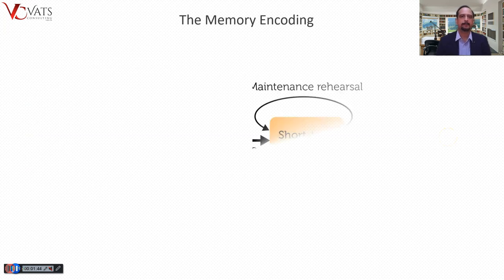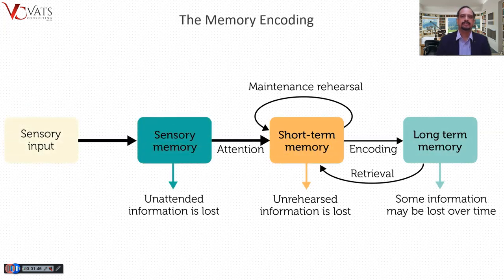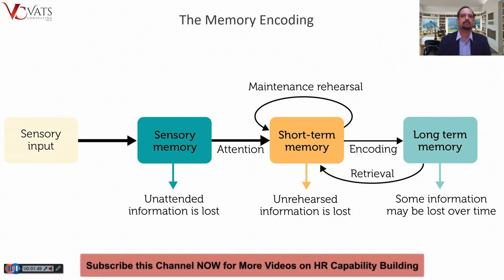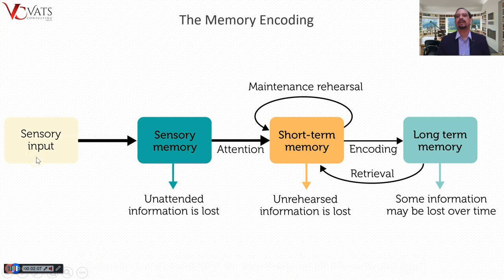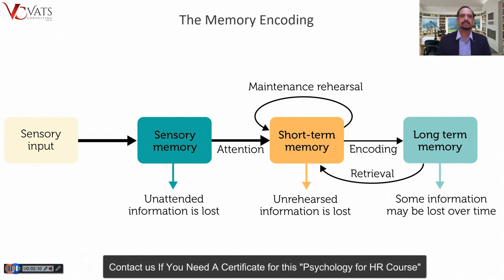Let's start with memory encoding - how memory works. Don't get overwhelmed with so many boxes and arrows; I'll take you through this journey one by one and explain all the terminologies. Let's start with sensory input. As you know, we have five sensory organs and continuously a lot of information is reaching our brain through them. This is sensory input, which reaches our brain and forms sensory memory. Sensory memory lasts only for milliseconds.